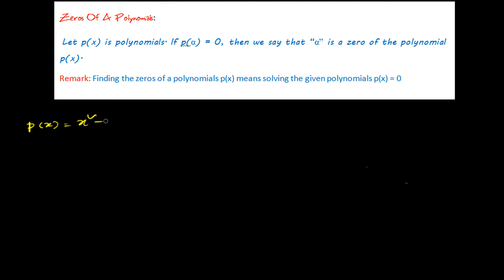Let's take a polynomial p(x) equals x squared minus 5x plus 6. This is a polynomial and we have to find the zero of this polynomial. That means we have to find such values of x so that if we substitute that value into the polynomial, we will get zero. So basically we need to solve this polynomial for x such that p(x) equals zero. If we factorize it...